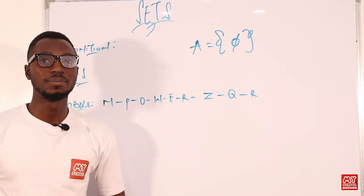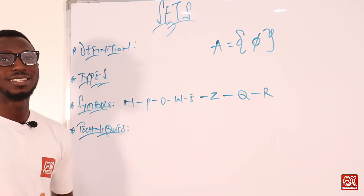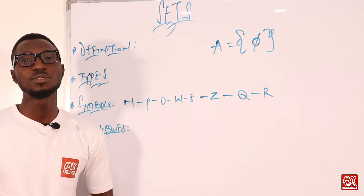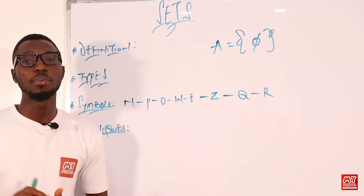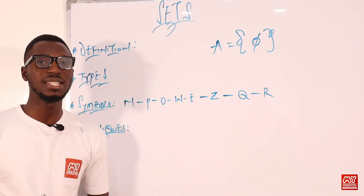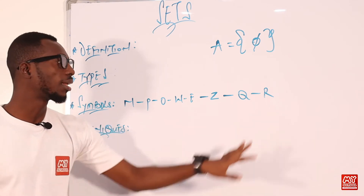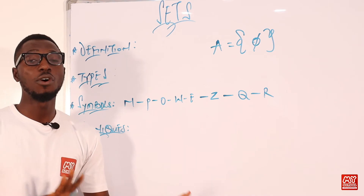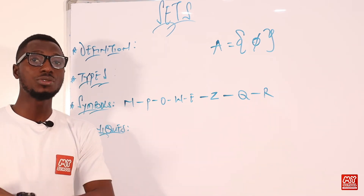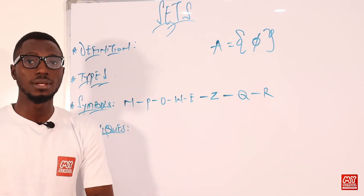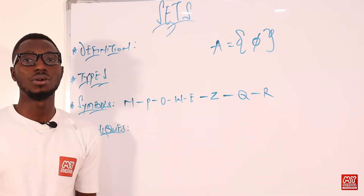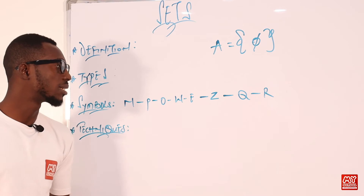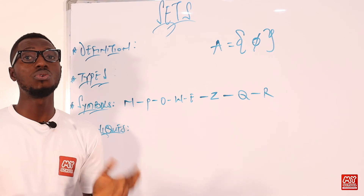Let's move to the symbols used in sets. We have R, which represents real numbers. Real numbers can be rational or irrational numbers. Q implies rational numbers. Z means integers — integers are numbers with negative or positive values, like minus one, plus one, plus two, or minus three.